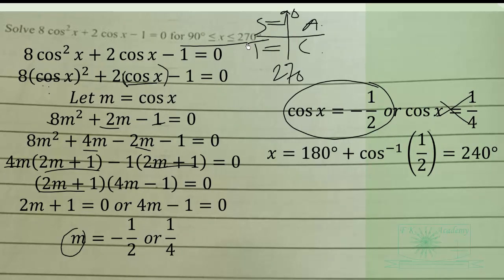So X will be equal to 180 plus cos inverse of half. Half is the principal value, so the principal angle will be cos inverse of half, that is acute angle. Then we take it to the third quadrant which is 180 plus the principal angle, so that is the third quadrant here. So that will be 240 degrees. Then the second quadrant will be 180 minus that angle, is 120 degrees.